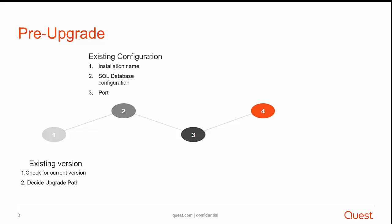The second step is to take a snapshot of your existing configuration. The existing configuration consists of installation name, SQL database configuration, and port information. In my environment, when I upgrade to 7.1, I will show you how to take the snapshot of this configuration.